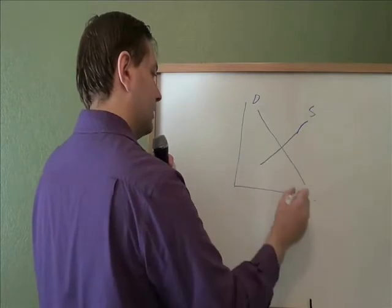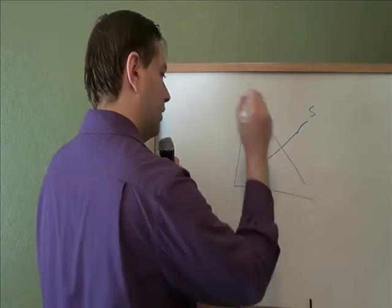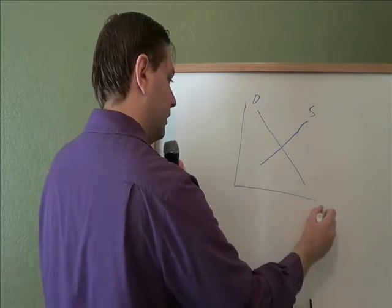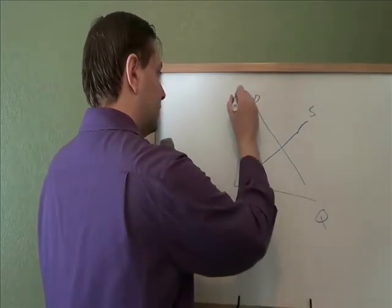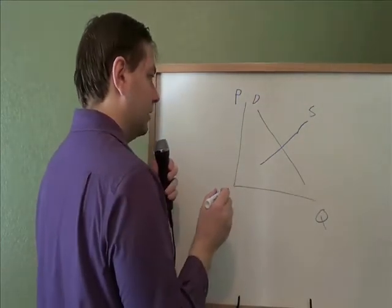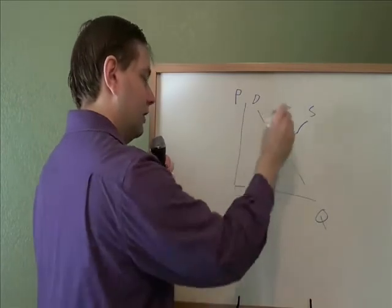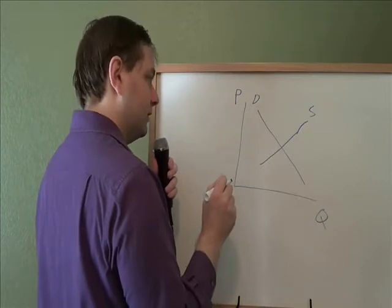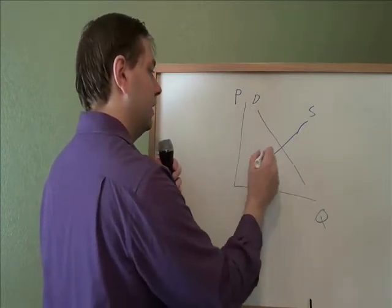Well, for this example, we're pretending that Starbucks is the only people that buy those beans, that home beans are not affected by whatever is making these more expensive. So if it's Starbucks being affected, the people buying Starbucks don't really care. It's the Starbucks people that run Starbucks, all of a sudden it's more expensive for them to make coffee. If it's more expensive for them to make coffee, that's going to decrease their supply.